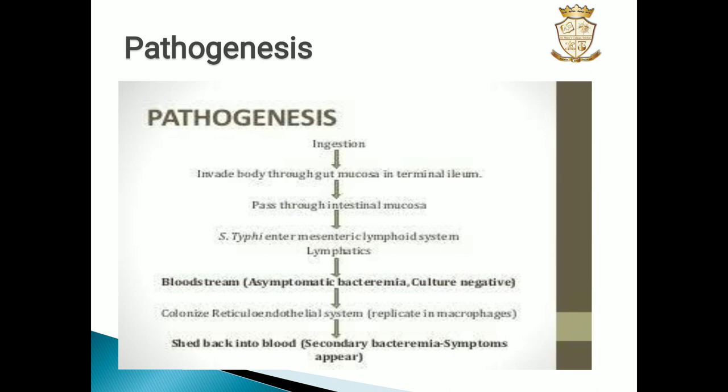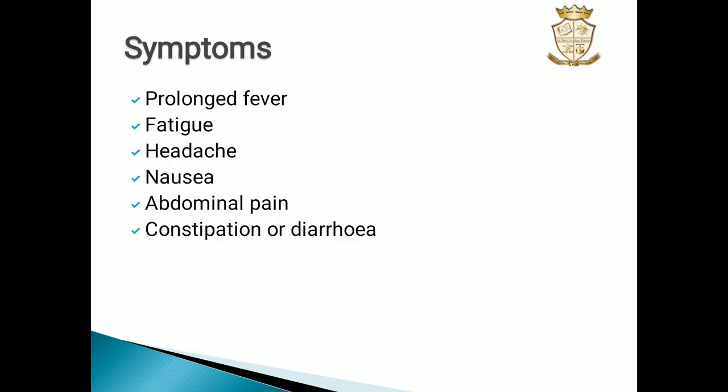In terms of pathogenesis, Salmonella typhi is first ingested and passes through the intestinal mucosa, entering the mesenteric lymphoid system. It then moves to the bloodstream, is sent back again, and during that period it grows and multiplies. Symptoms include prolonged fever along with fatigue, headache, nausea, abdominal pain, and either constipation or diarrhea.